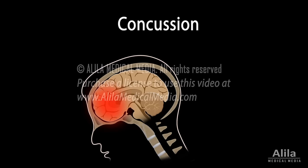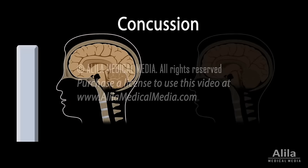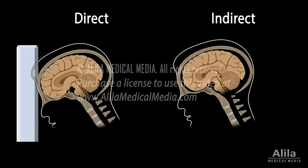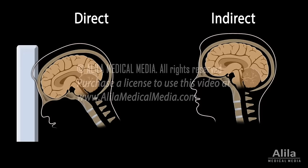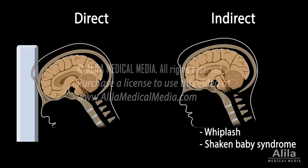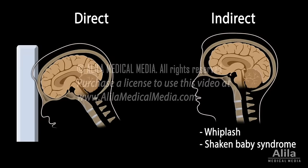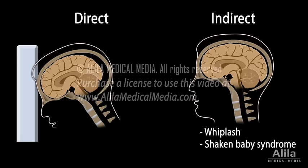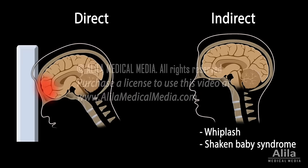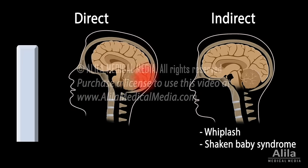Concussion is a mild traumatic brain injury that affects normal brain functions. It occurs as a result of a forceful blow, either direct or indirect to the head. An example of an indirect blow is a whiplash-type injury that causes the brain to shake quickly back and forth inside the skull. In a direct blow, injury may develop on the side of contact with the force or on the opposite side of the head.